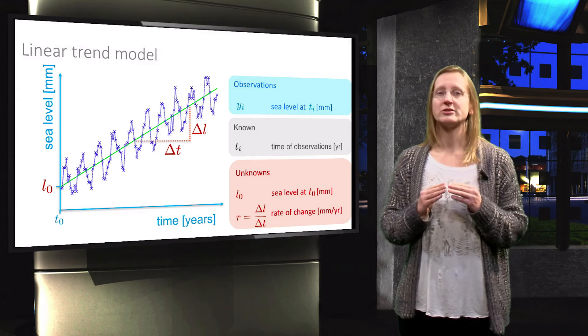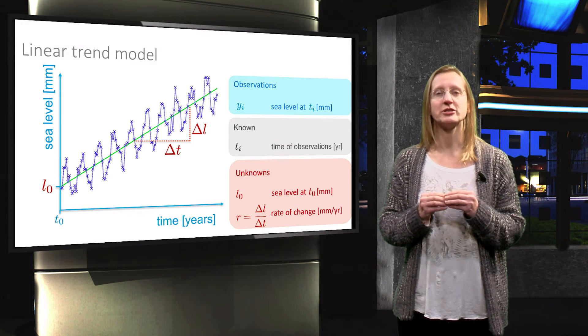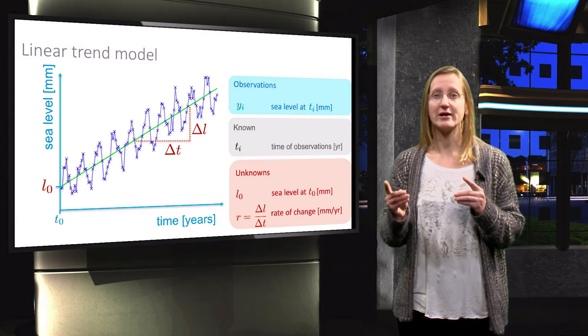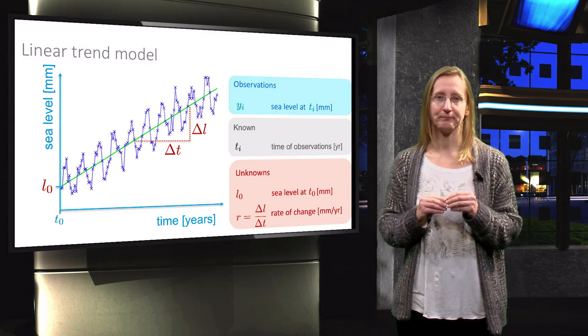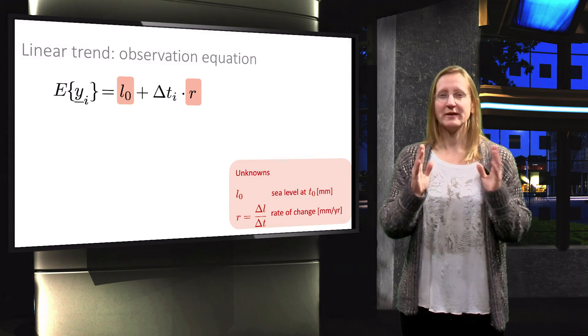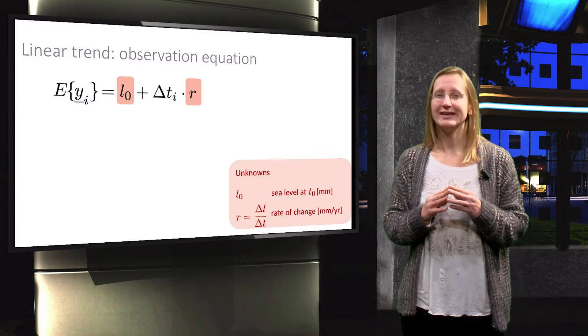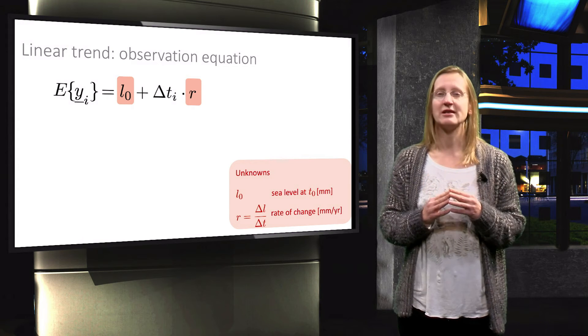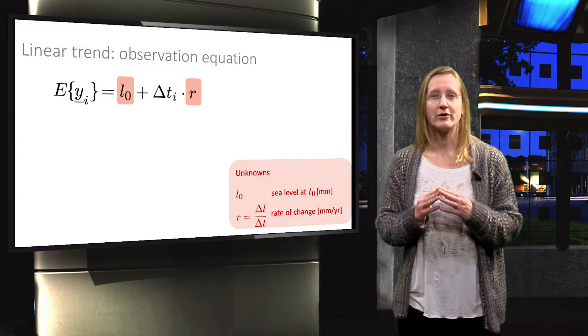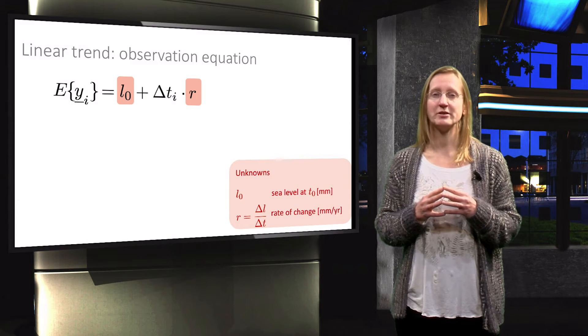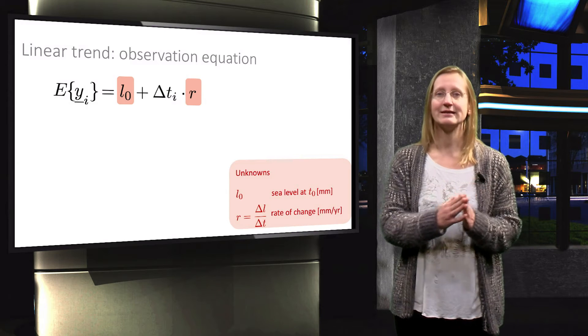We now have all the ingredients we need to set up the observation equations, which we will derive first for a single observation at time Ti. The expected value of this observable will be equal to the initial sea level, L0, plus the rate of change, R, multiplied by the time interval between Ti and T0.